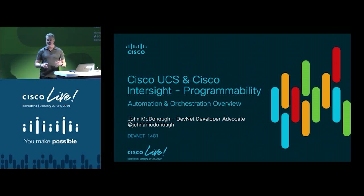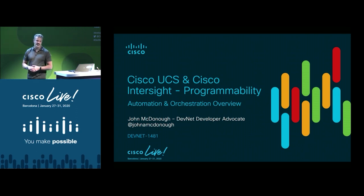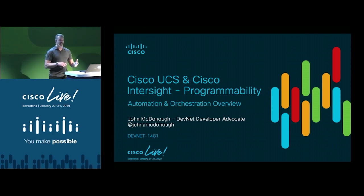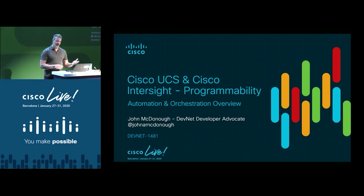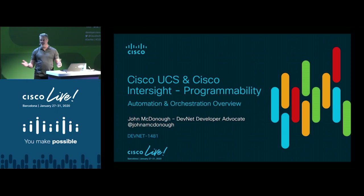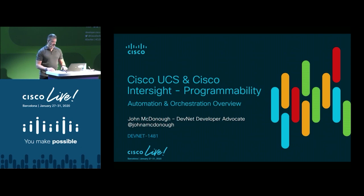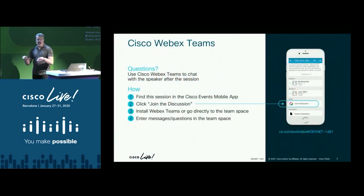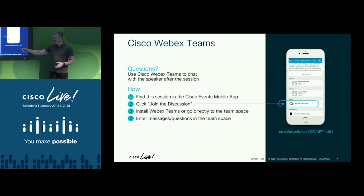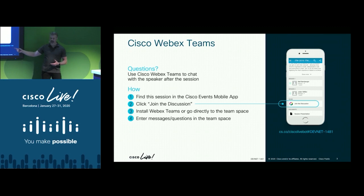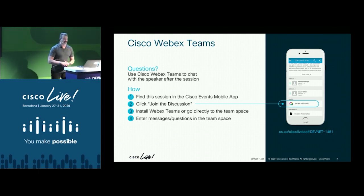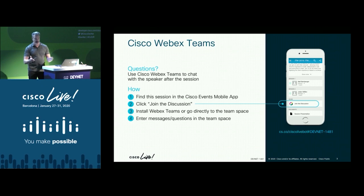That's UCS, Intersight, UCS Central, standalone, Cisco IMC, Python, PowerShell, curl, XML — whatever it is that fits your need. I think we can find a way to program it with UCS. These slides are already in the team room at DevNet-1481, so definitely join that room if you want them.